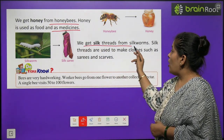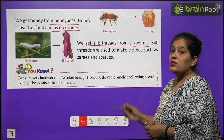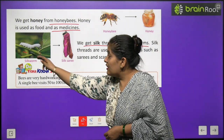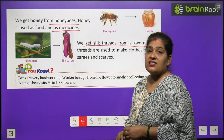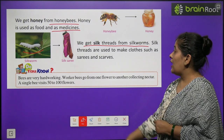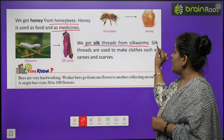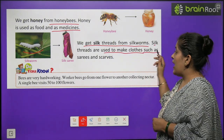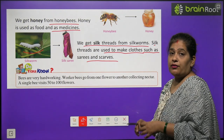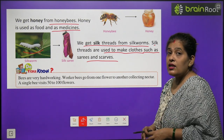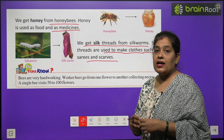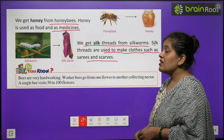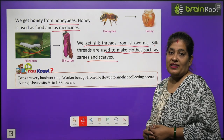We get silk thread from silkworms. Silk hume kis se milta hai? Silk ke keel se — usse hume thread milta hai. Silk threads are used to make cloth such as sarees and scarves. Aur silk ke dhage se kya banta hai? Kapda — kaunsa kapda? Saree aur scarf bante hai.